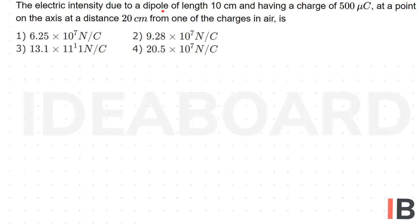The electric intensity due to a dipole of length 10 centimeter and having a charge of 500 micro coulomb at a point on the axis at a distance 20 centimeter from one of the charges in air is: